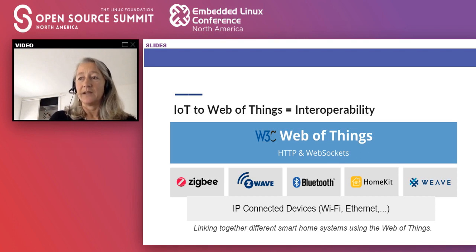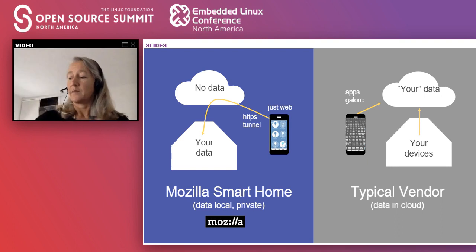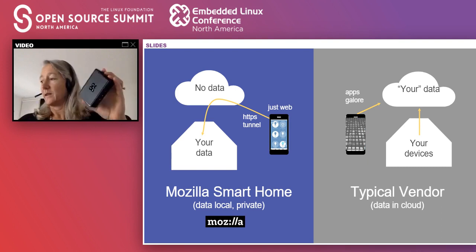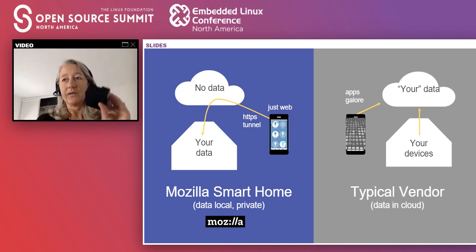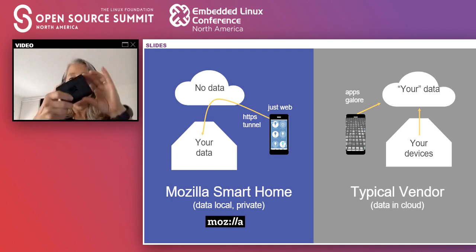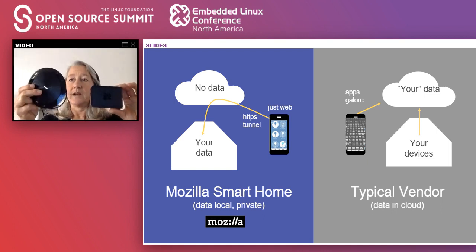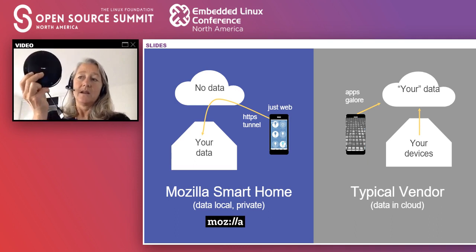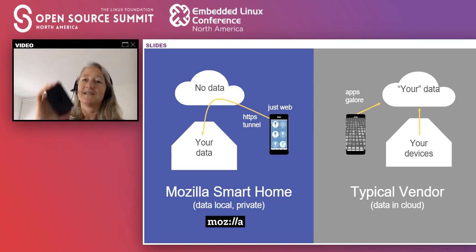Eventually you bring all the data to one place. The beauty of the Mozilla WebThings gateway is that it runs on a Raspberry Pi. There's a kit where you can buy it with a pre-flashed micro SD card and turn it into your home gateway just like that. All of the data runs here, including a local voice system — I plug a Jabra speaker microphone into a USB port and can do voice commands. Those voice commands don't ever leave this box.